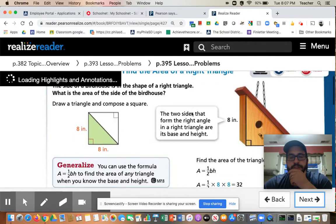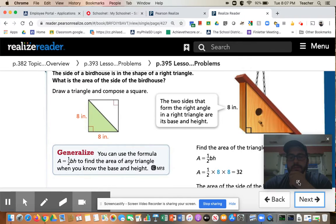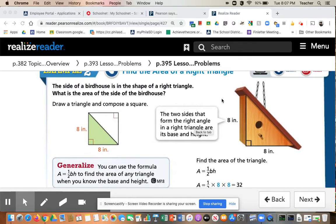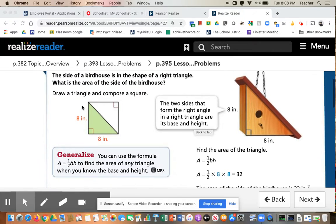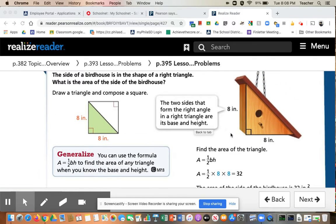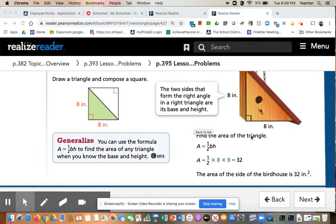So if we look at example number two, and I'm going to hide myself again, we see over here a picture of a birdhouse. And it says the side of a birdhouse is in the shape of a right triangle. What is the area of the side of the birdhouse? So what we have to do is we are going to use our formula and see if we can figure out how much area this side of the birdhouse makes up.